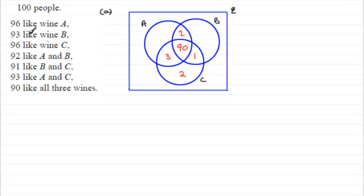For B, we've got 93 liking wine B. We've already got 92 and that one — that's 93. So that means that the people liking B only must be zero, which comes to 93. Now 96 like wine A. We've already got 93 and another two — that's 95. So that means we've got one person liking A only.